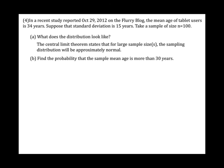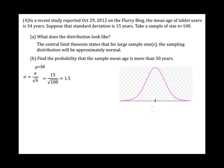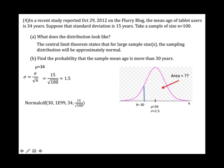Part B: Find the probability that the sample mean age is more than 30 years. Apply the Central Limit Theorem — the mean doesn't change, still 34. Find the standard deviation by plugging into the formula: you get 1.5. Sketching the graph, more than 30 years means we're looking for the area to the right. Given x, find the area using normalcdf from 30 to 1E99, then state the mean and standard deviation. You should get 0.9962.